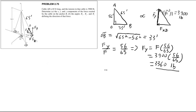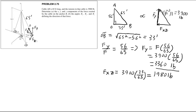Similarly, f_xz/F = 33/65, so f_xz = 3900 × (33/65) = 1980 pounds. However, this is not a final component answer — it's the force projected onto the xz plane, so I now need to draw another triangle in the xz plane.